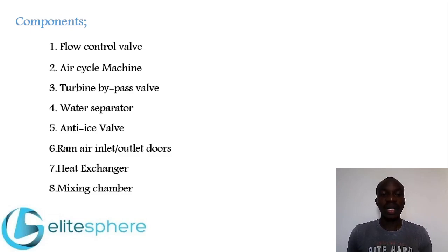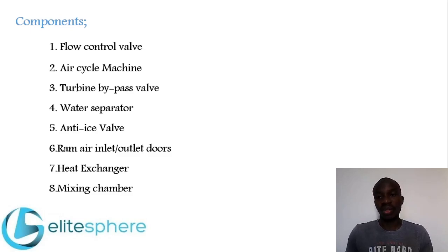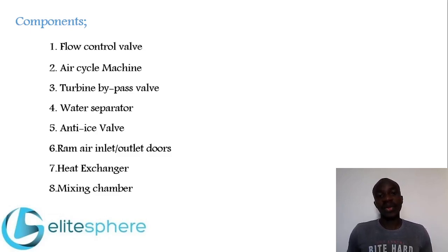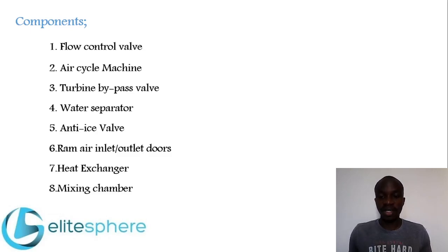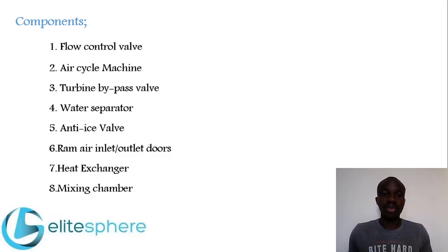The next component is an air cycle machine. An air cycle machine has two main functions and has two components within it to achieve those functions: it has a compressor and it also has a turbine. Both the compressor and the turbine are mounted on a single shaft, which in some aircraft configurations also has a fan used in the ram air duct to draw ram air over the heat exchanger.